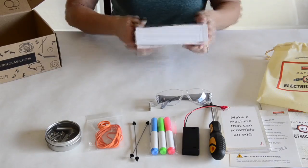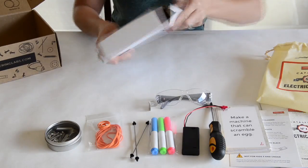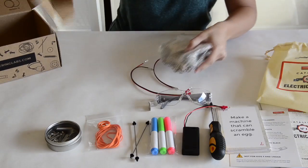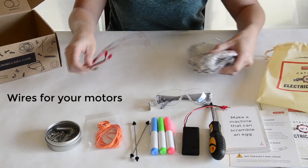Inside this box we're going to find all of the wooden parts as well as a couple of other cool things. These are the wires that you're going to attach to your motors.